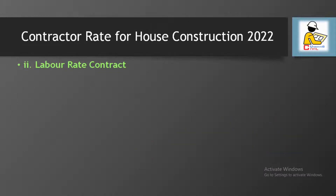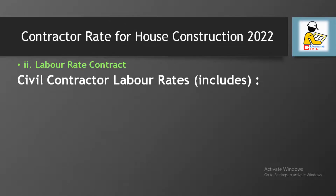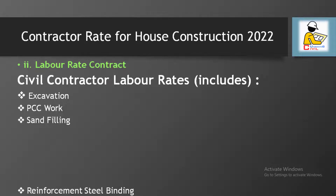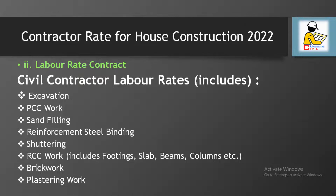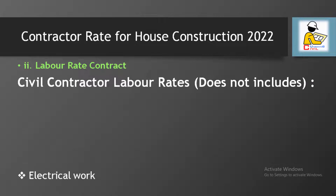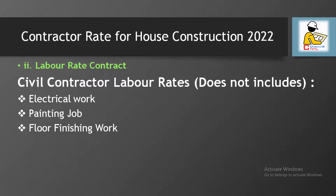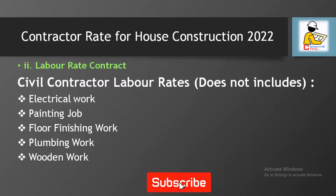Another way is the labor rate contract. First, let's know what is included in the civil contractor rate: excavation, PCC work, sand filling, reinforcement binding, shuttering, RCC work, brick work, and plastering work. What is not included in civil contractor labor rates: electrical work, painting, floor finishing, plumbing work, and wooden work.